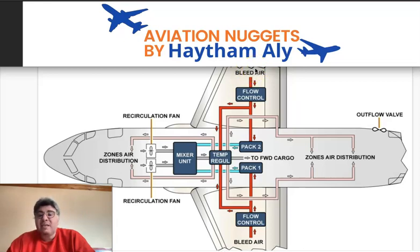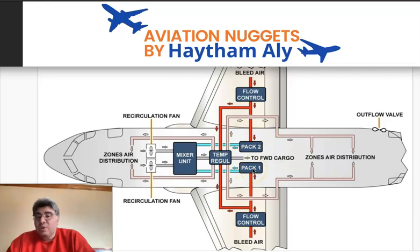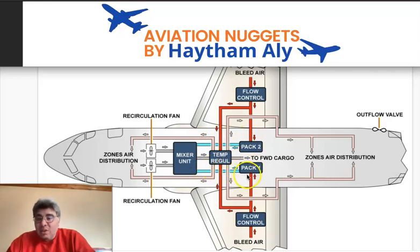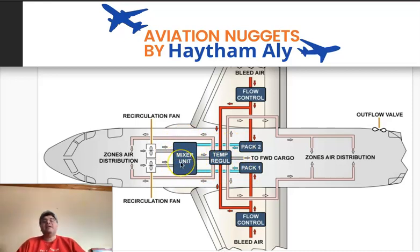The bleed air passes through pressure and temperature regulation components, then through a flow control valve — which is the on/off valve for each pack. The packs then perform basic temperature regulation, and their cold air output is supplied into what is called a mixer unit.